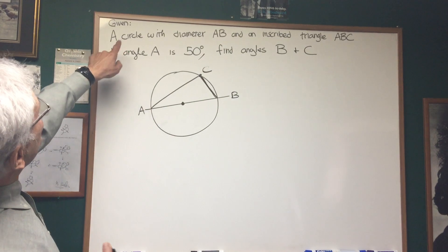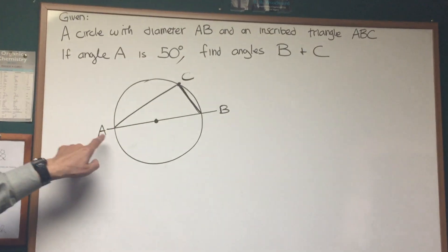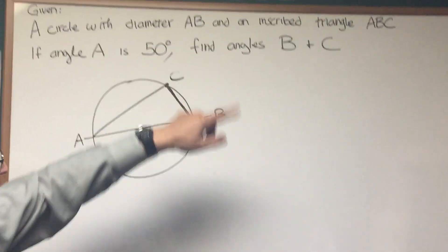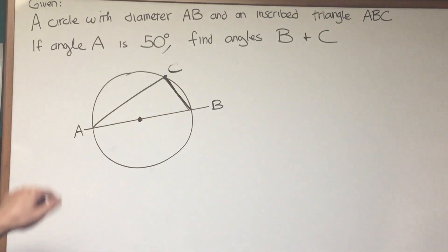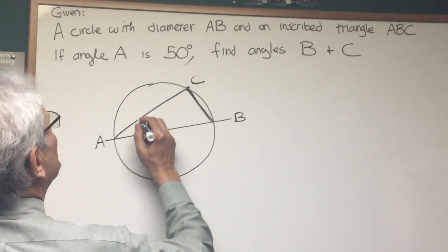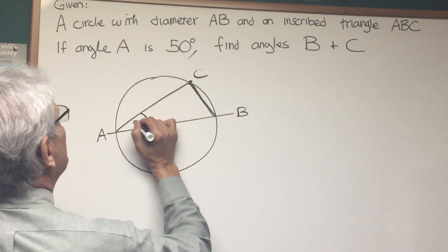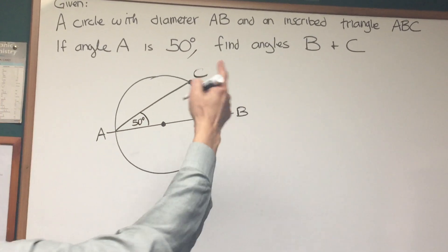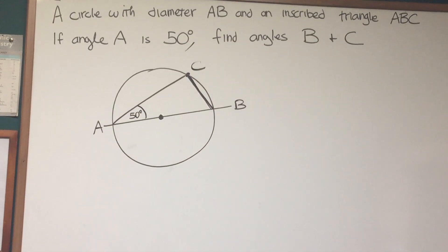Okay, let's read this problem together. A circle with diameter AB and an inscribed triangle ABC. That's what we're given. If angle A is 50 degrees, so let's label that 50 degrees. Okay, find the values of angles B and C.